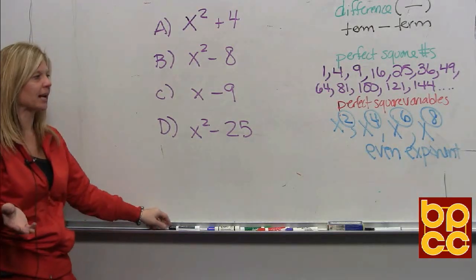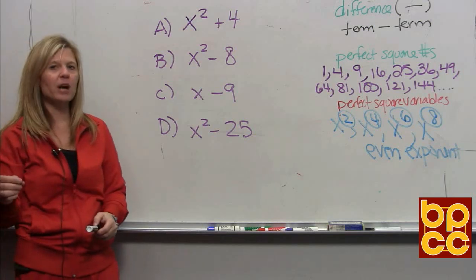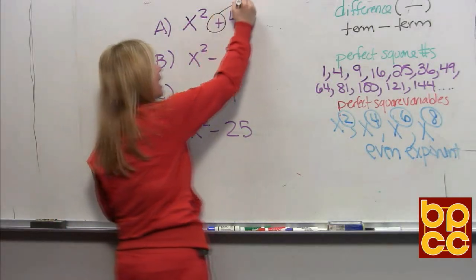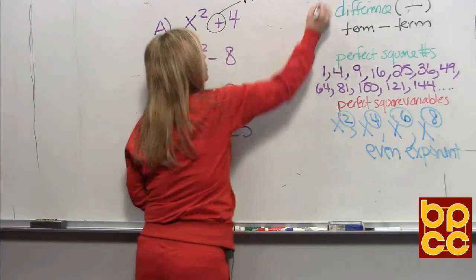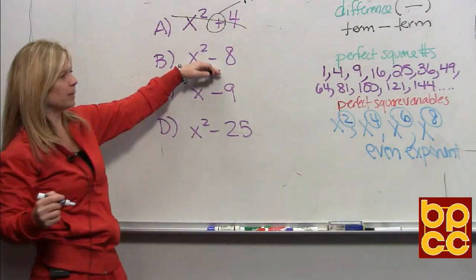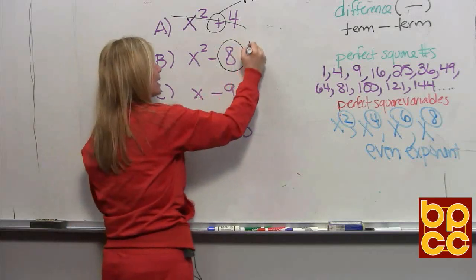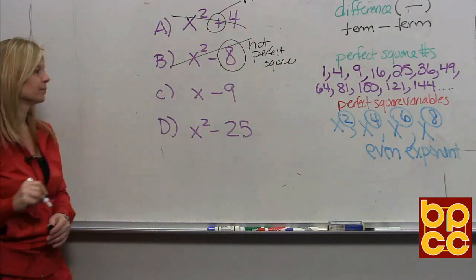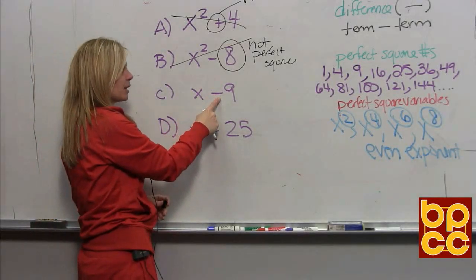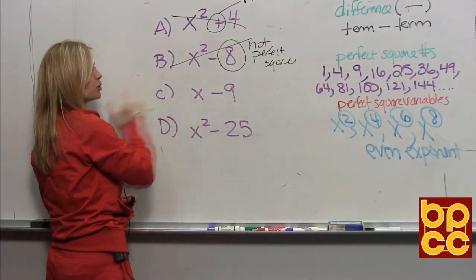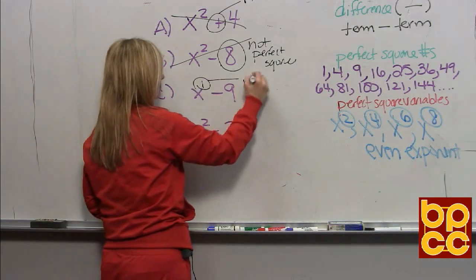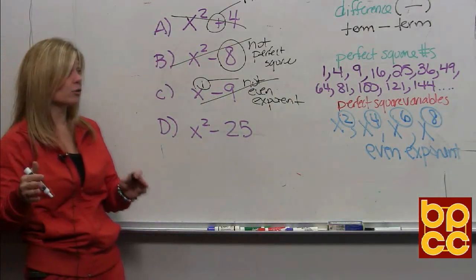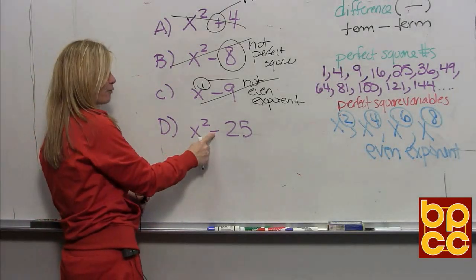Looking at the four expressions in your class notes — which is a difference of perfect squares? Is it A? No, because that is not a difference; that is a sum, so that doesn't work. Is it B? It has the difference, but eight is not a perfect square, so that's not today's rule. Is it C? It's got the difference, and nine is a perfect square, but the understood exponent is one — that's not even. If it's not an even exponent, we can't do this rule.